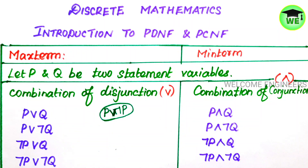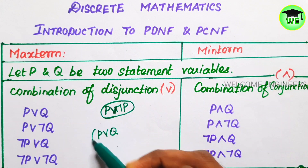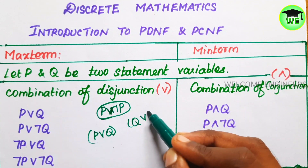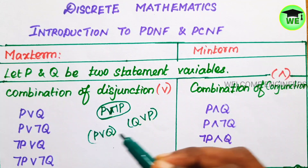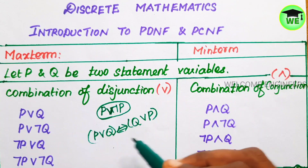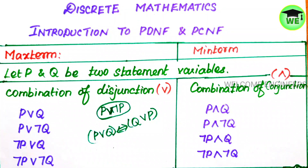Using the commutative law, if any two terms are equivalent — for example when we get answers like P or Q and Q or P — then these two terms are equivalent. We eliminate one of them and choose only one term for our answer. The remaining terms collected are called max terms.